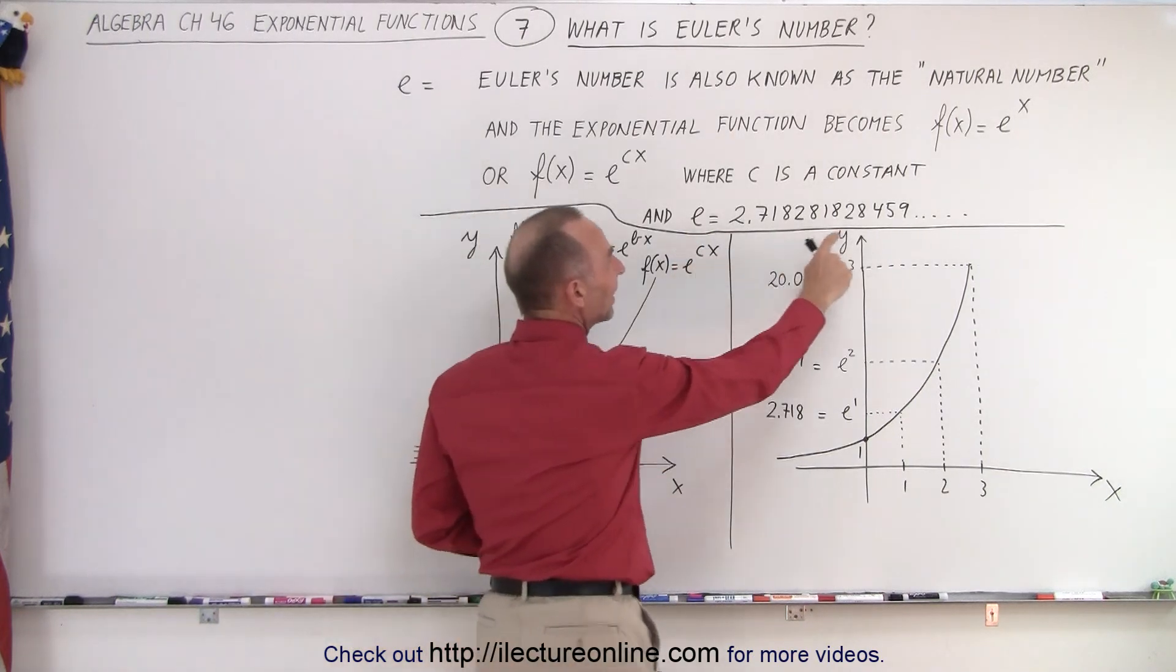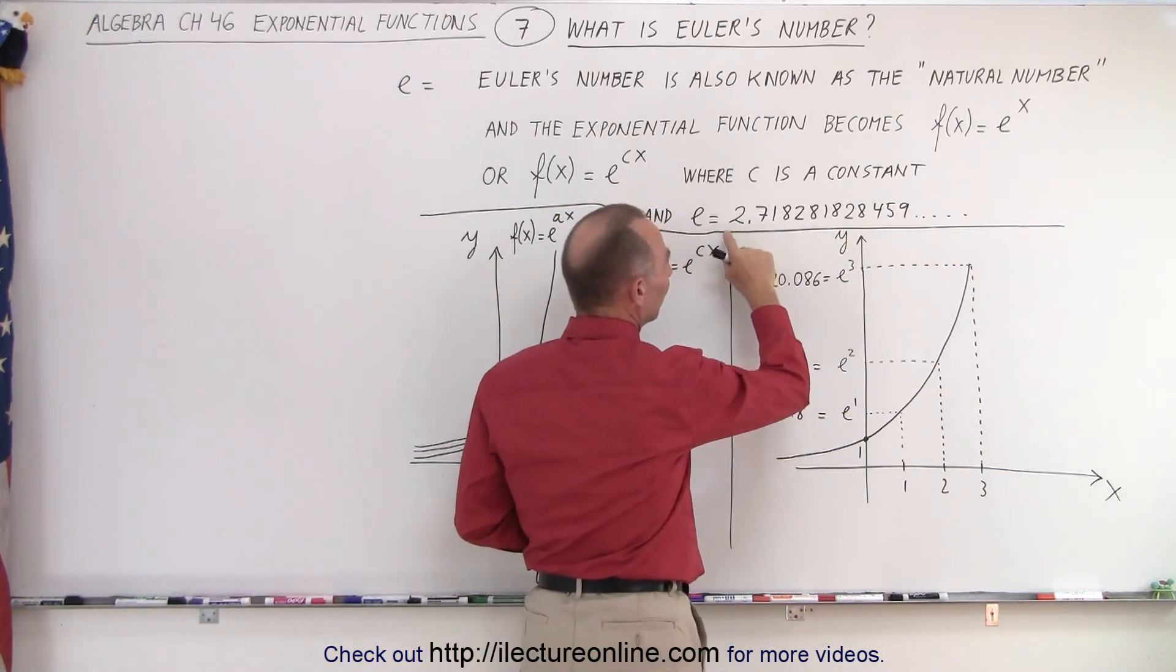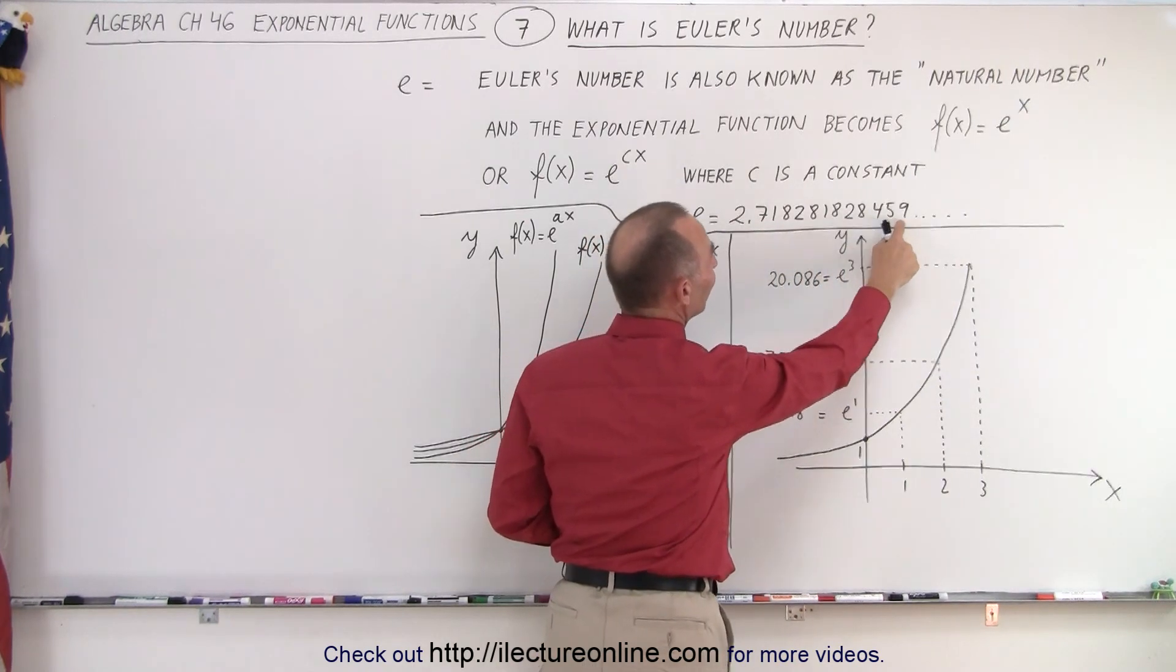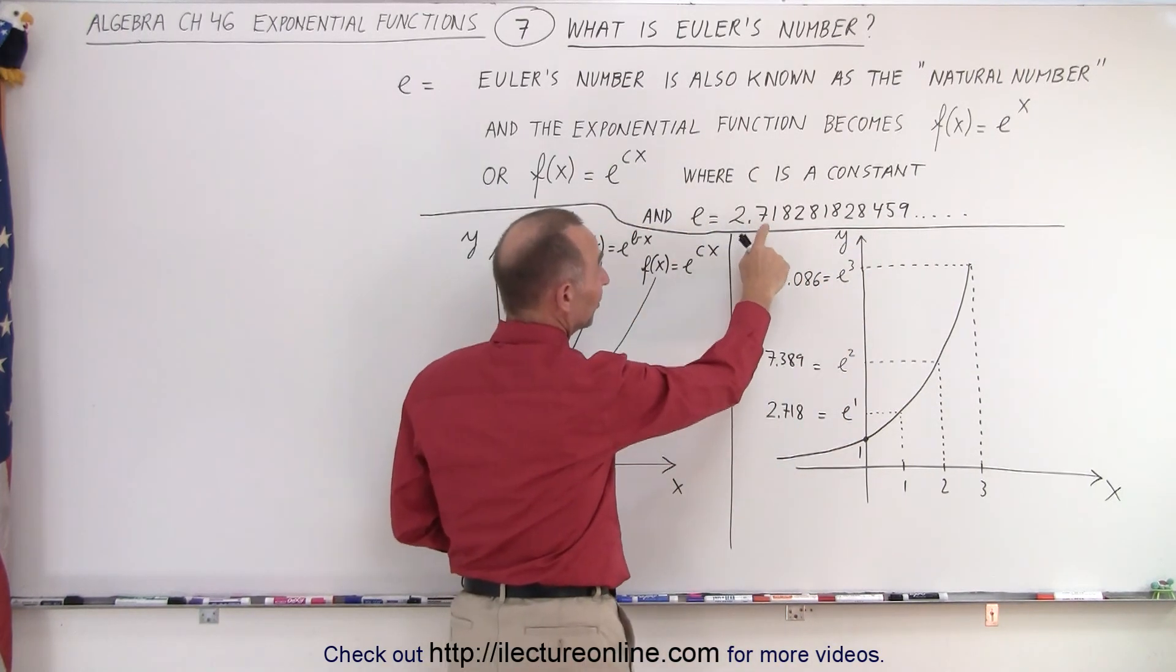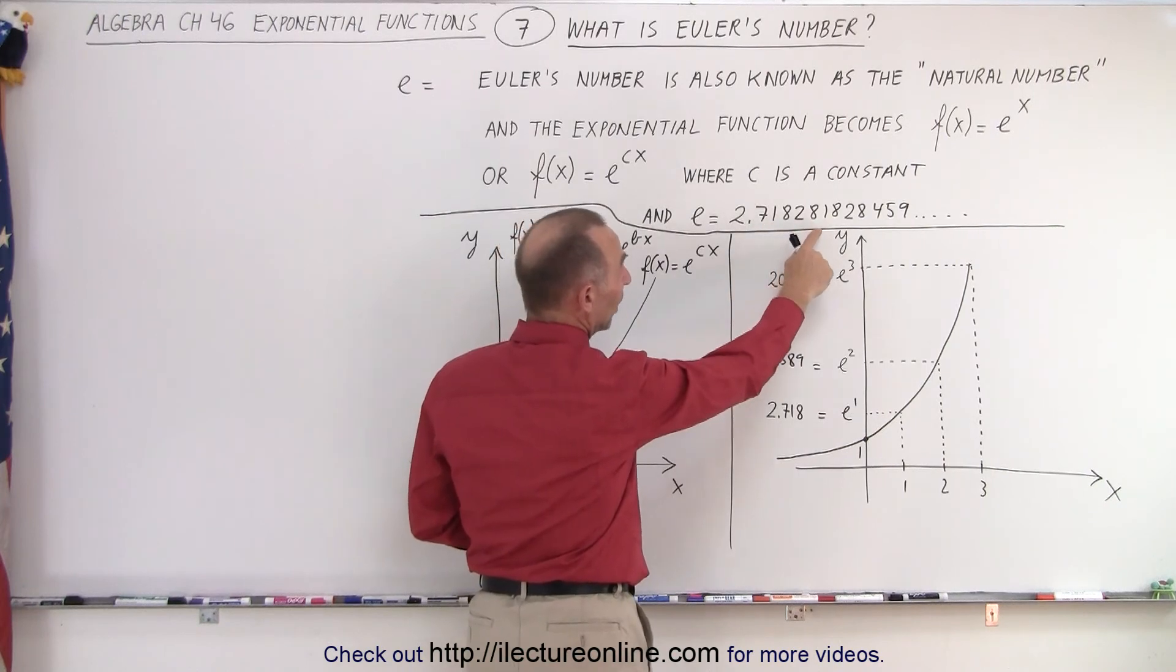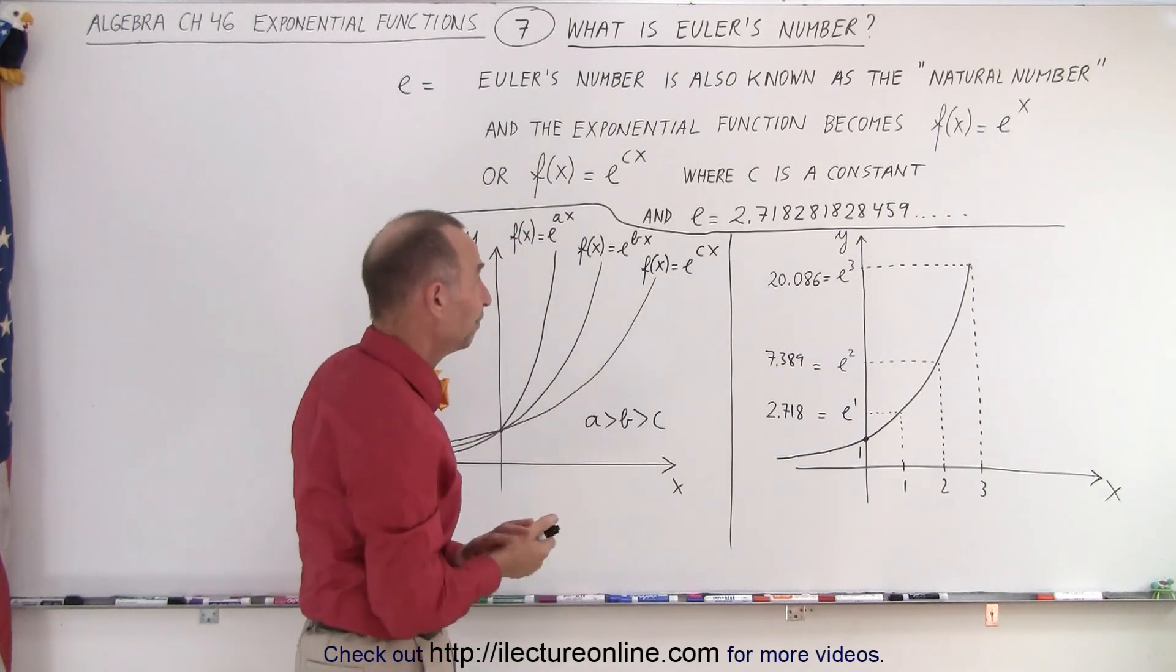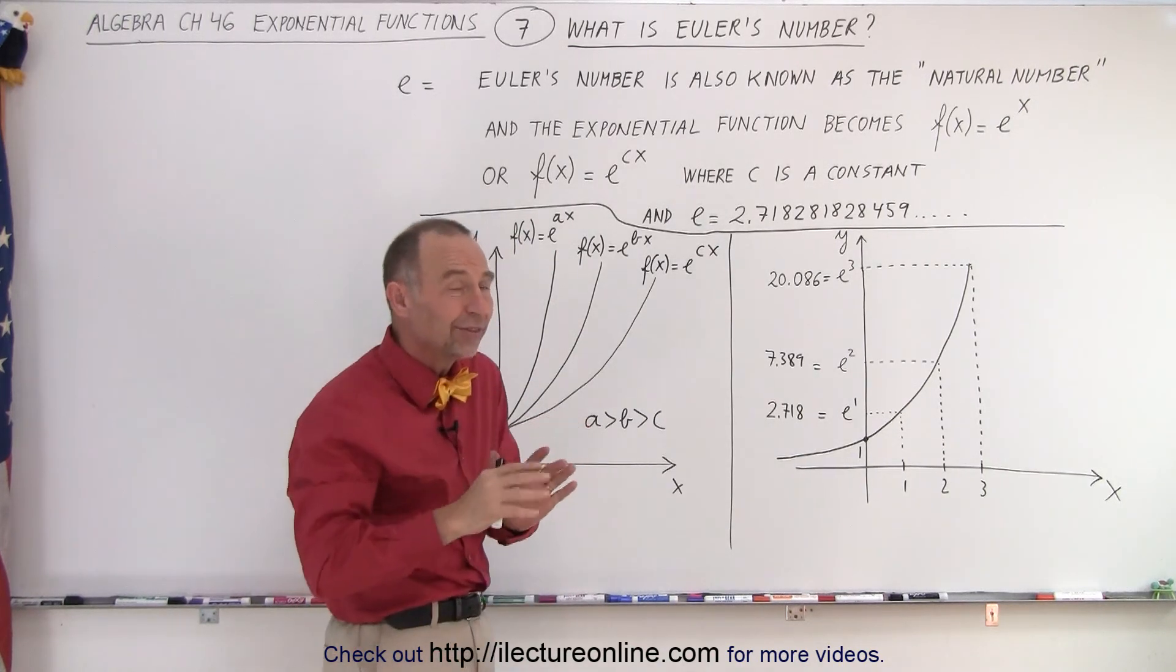So, E is a non-ending decimal. The first 12 decimal places are 2.718281828459, and it just keeps on not repeating forever. So, it's about 2.7.